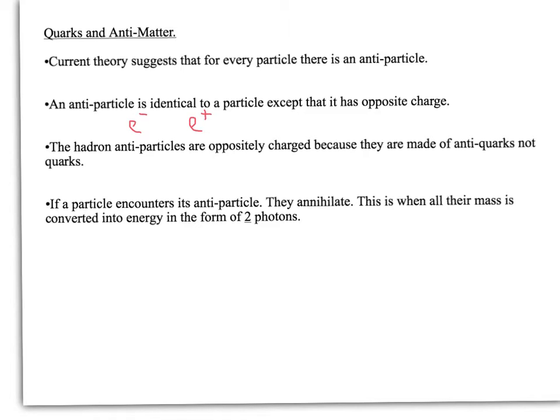So with hadrons, the antiparticles have an opposite charge because they're actually made up of antiquarks instead of quarks. And they're made up with the opposite quarks to the hadron that would make up the particle type. And we'll have a look at the different charges of the different quarks in a second.